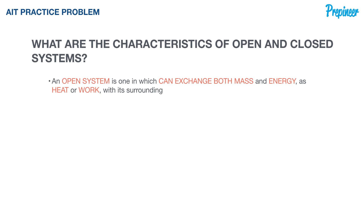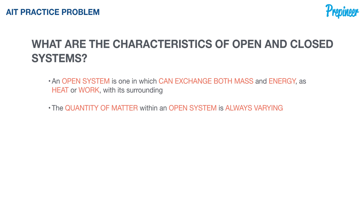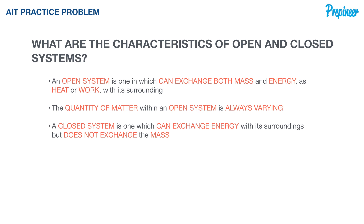An open system is one that can exchange both mass and energy — as heat or work — with its surroundings. The mass within the system may or may not be constant, and the processes take on a flow-type nature. Water pumps, engines, boilers, turbines, and heat exchangers are all examples of open systems. Most engineering machines and equipment we work with in the real world are actually open systems.